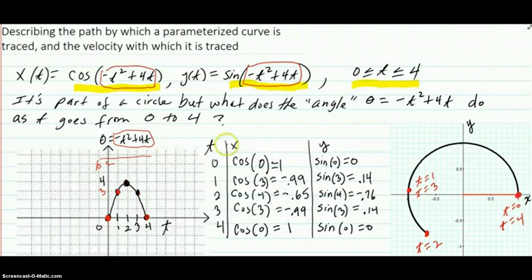So when we plot our t's and get our x's and our y's, these are the points that we get. And if we plot those, you see that at t equals 0, you're here.